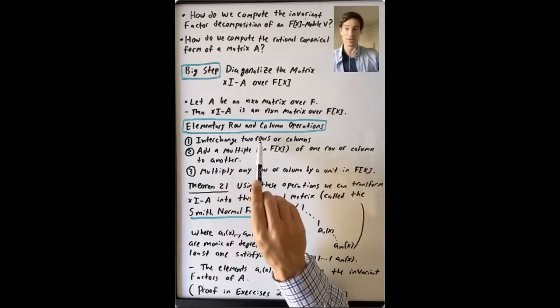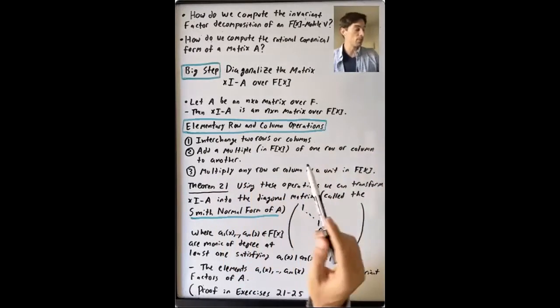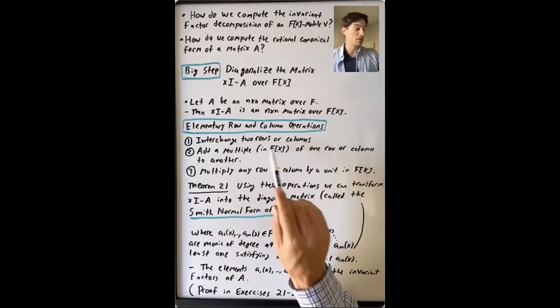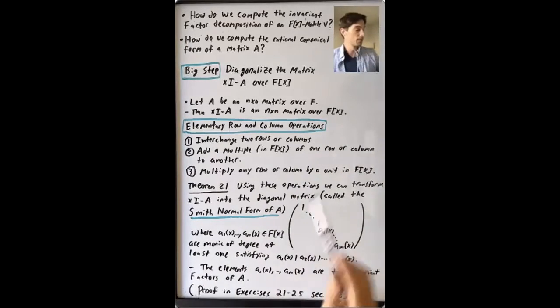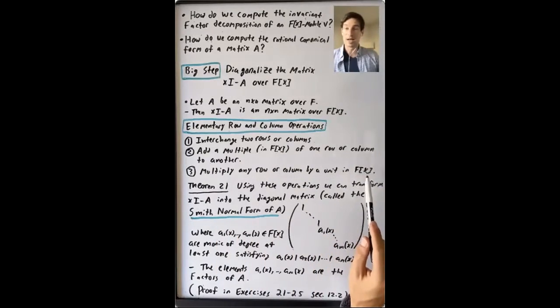We're allowed to interchange two rows or interchange two columns. We're allowed to add a multiple of one row or column to another. What does that mean, multiple? A multiple in F[x]. So we could take like x times the first row and add it to the third row. Or we can multiply any row or column by a unit in F[x].